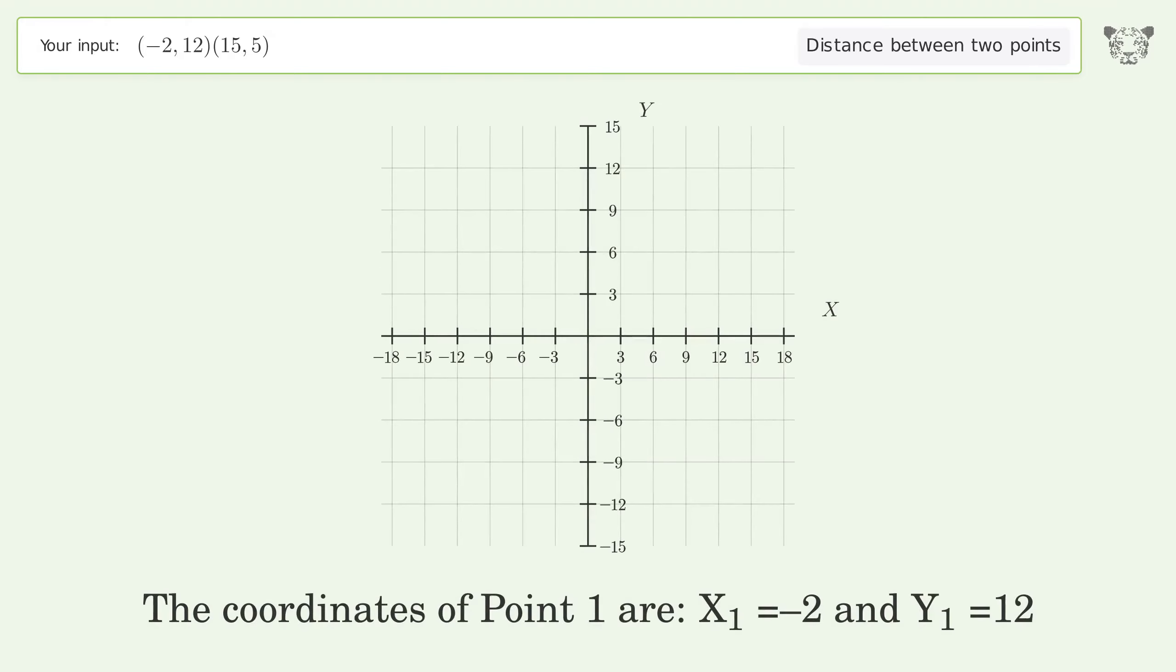The coordinates of point 1 are x1 equals negative 2 and y1 equals 12. The coordinates of point 2 are x2 equals 15 and y2 equals 5.